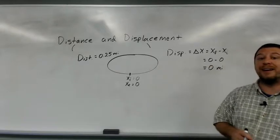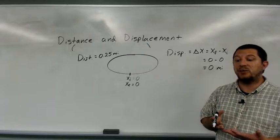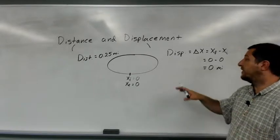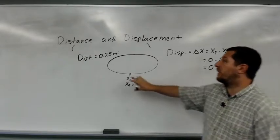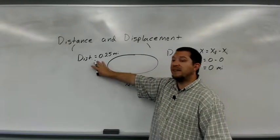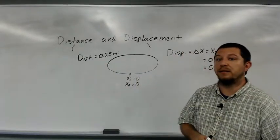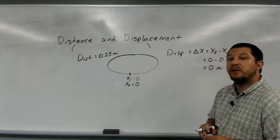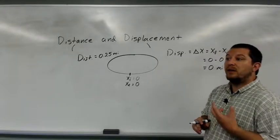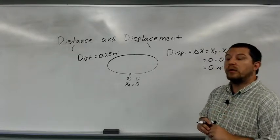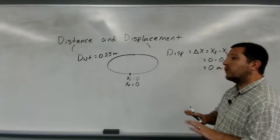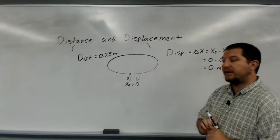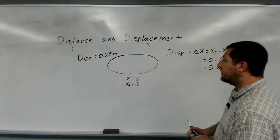What about the displacement? x-f minus x-i — in this case both x-f and x-i are zero, so the displacement is actually zero miles. I have zero displacement but a quarter mile of distance. When talking about the difference between distance and displacement we must be careful to specify which quantity we're talking about — they are not the same thing.